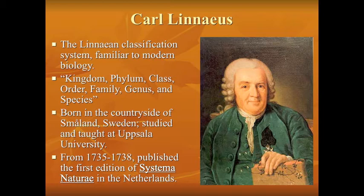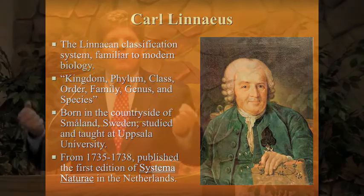He was born in Sweden and eventually taught at Uppsala. He published Systema Naturae, which is the academic basis for our modern biological classification system. Mammalia for mammals, Reptilia for reptiles, Amphibia for amphibians — all of these come from Carl Linnaeus.